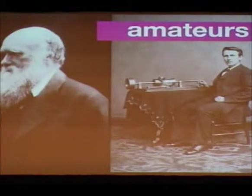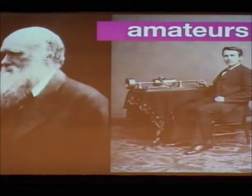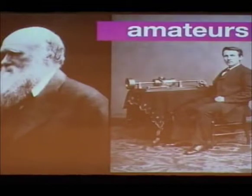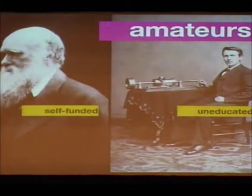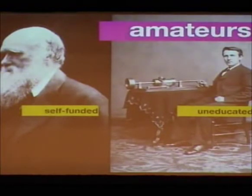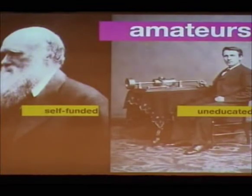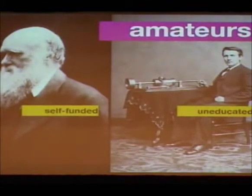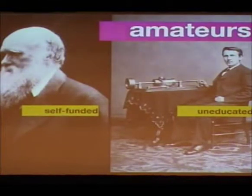It didn't always used to be this way. A lot of the scientific heroes that we look up to today would actually be considered amateurs by today's standards. Charles Darwin, who created the theory of evolution, was primarily self-funded. Thomas Edison, who created the light bulb, was primarily uneducated — he was homeschooled — and a lot of the experiments he did before he became famous were done during his night job, during his second shift.